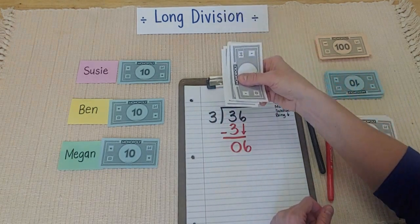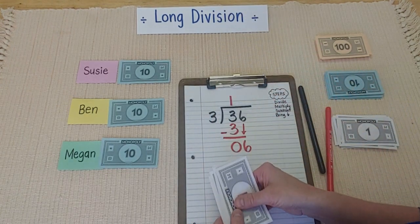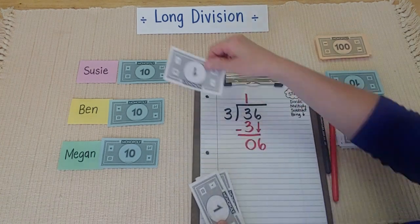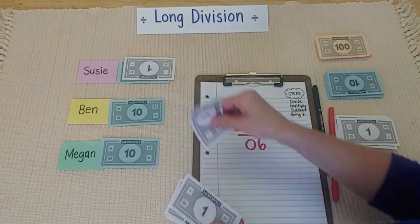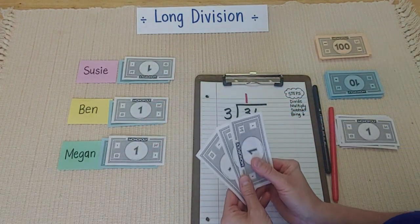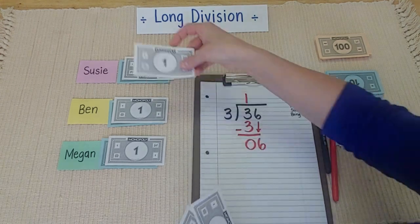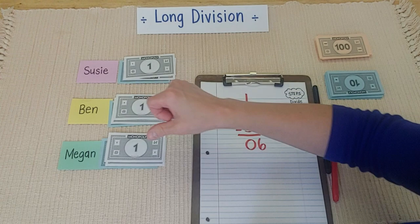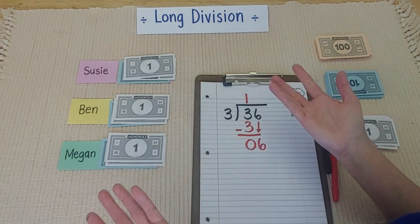I'm going to bring down the ones I didn't use. And share them out as best as I can. So, let's get started. One for Susie. One for Ben. One for Megan. I still have more ones. So, I have to keep going. One for Susie. One for Ben. One for Megan. I'm all out of ones.